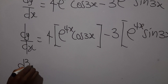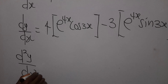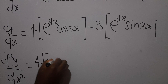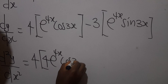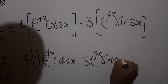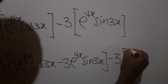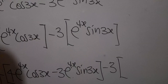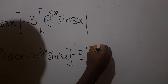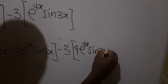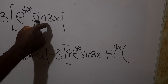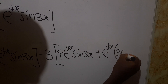So we can say our d²y/dx² will be equal to 4 times bracket: the differential of e^(4x)cos(3x) gives us 4e^(4x)cos(3x) minus 3e^(4x)sin(3x). Then minus 3 times bracket: we keep sin(3x) and differentiate e^(4x) to get 4e^(4x), then bring sin(3x), plus we keep e^(4x) and differentiate sin(3x) to get 3cos(3x).